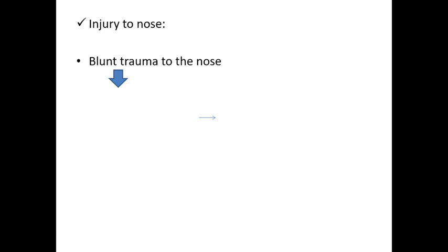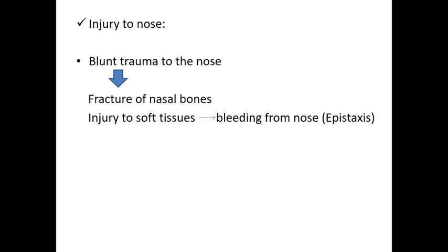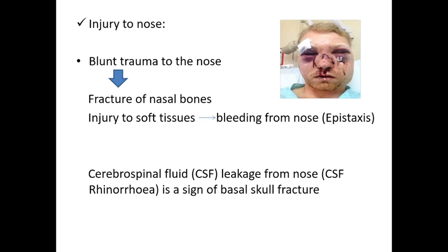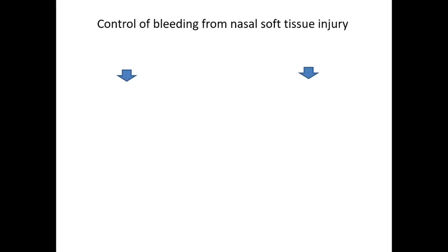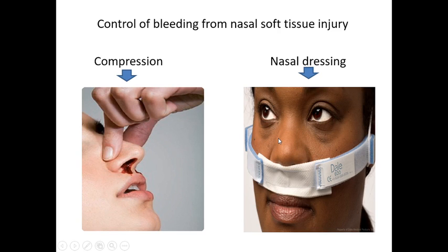Injury to the nose can be blunt trauma causing nasal bone fracture, or injury to the soft tissues causing bleeding. Bleeding from the nose is called epistaxis. In head injuries, CSF can also come out through the nose — this is called CSF rhinorrhea. To control epistaxis, apply compression over the soft part of the nose, or apply a nasal dressing.